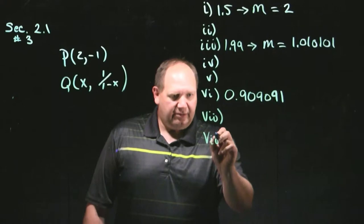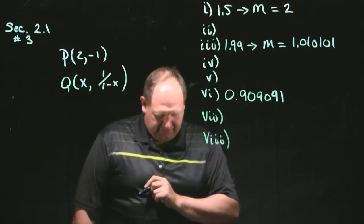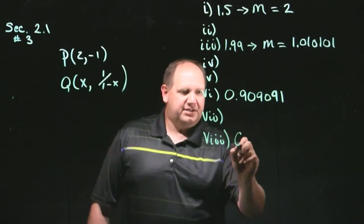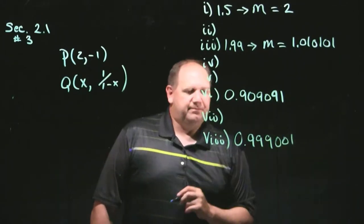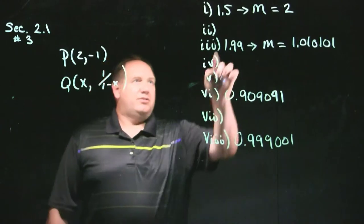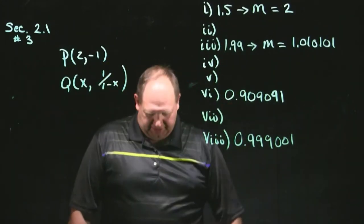9 to 6 decimal places is 0.909091. And then vii, I also worked out, or I left, sorry, I left that for you to work out, but I worked out vii. And vii, and vii is 0.999001. Okay? So you figure out those data points as well.